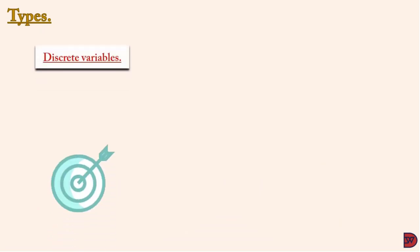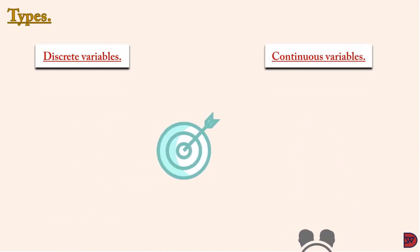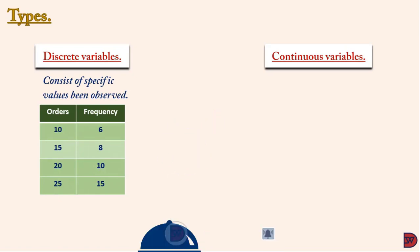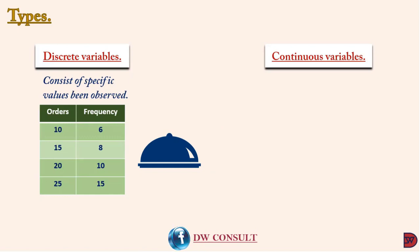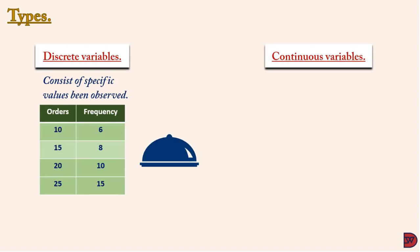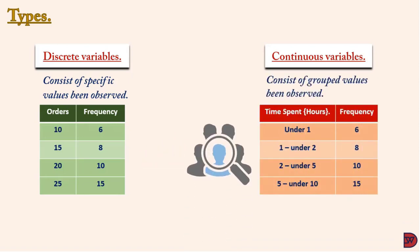We have discrete and continuous variables. With discrete, it consists of values that are of a specific nature being observed. For example, a restaurant is trying to record the number of orders it received per day for a particular month. The table shows six days each received 10 orders, eight days each received 15 orders, ten days each receiving 20 orders, then 15 days receiving 25 orders.